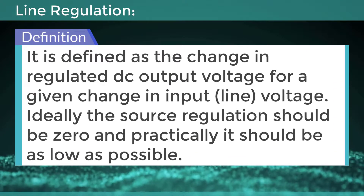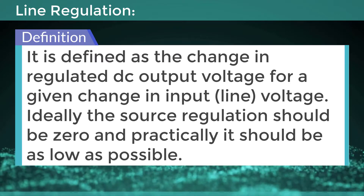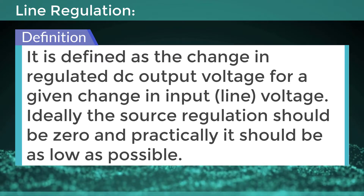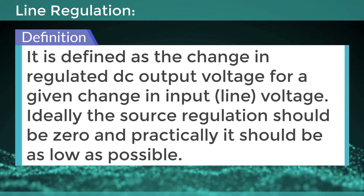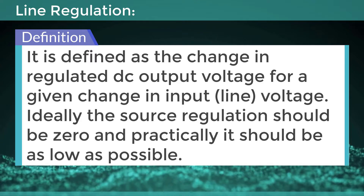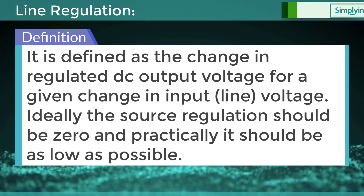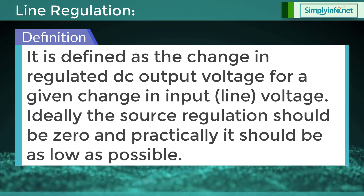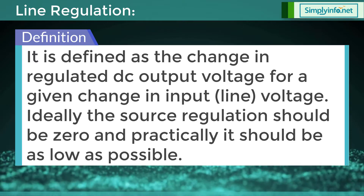Line regulation is defined as a change in regulated DC output voltage for a given change in input line voltage. Ideally, the source regulation should be zero, and practically it should be as low as possible.